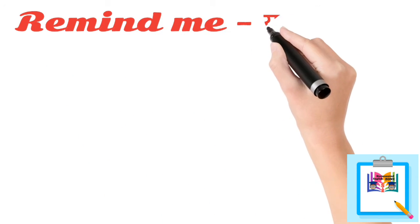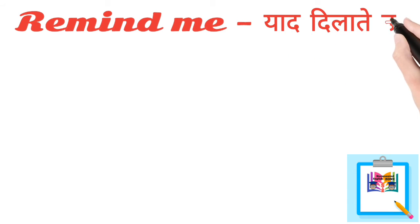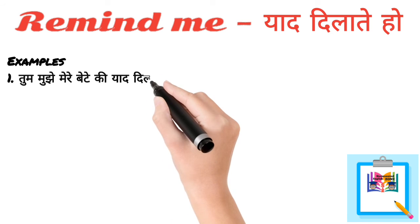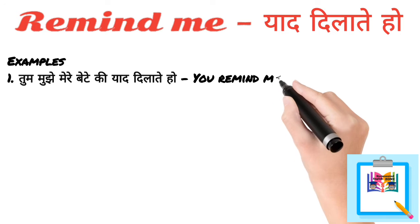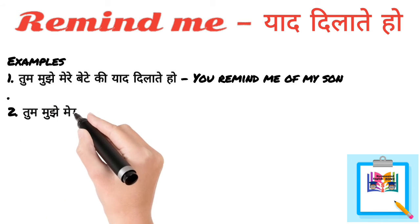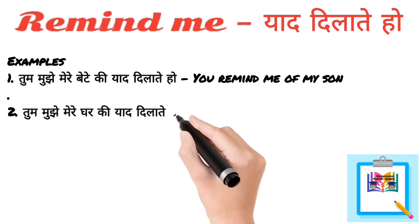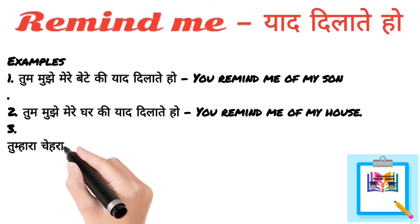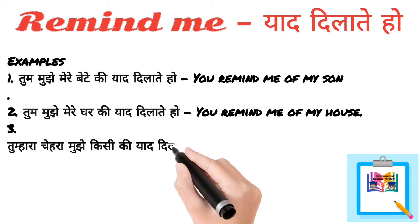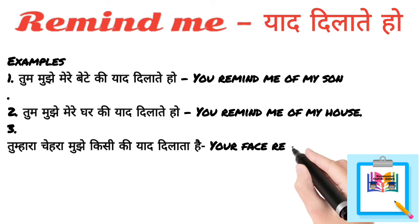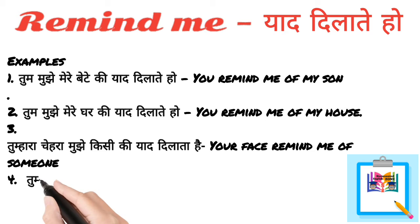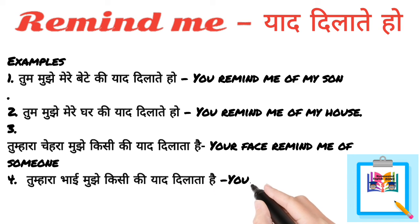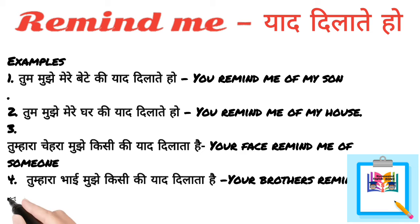Remind me — yaad dilate ho. Examples: Number one — Tum mujhe mere bete ki yaad dilate ho — You remind me of my son. Number two — Tum mujhe mere ghar ki yaad dilate ho — You remind me of my house. Number three — Tumhara chehra mujhe kisi ki yaad dilata hai — Your face reminds me of someone. Number four — Tumhara bhai mujhe kisi ki yaad dilata hai — Your brother reminds me of someone.